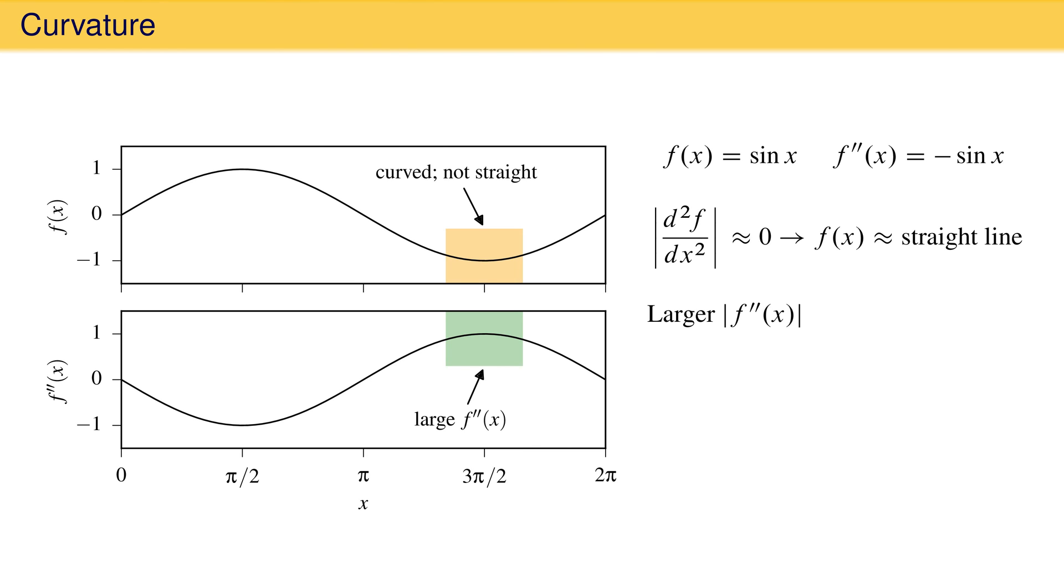Intervals with larger magnitudes of the second derivative result from a function that is changing its shape rapidly in that interval. This is an important concept that has a name. The magnitude of the second derivative of a function is called the curvature of the function.